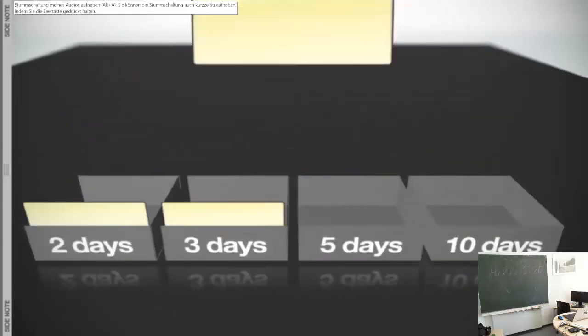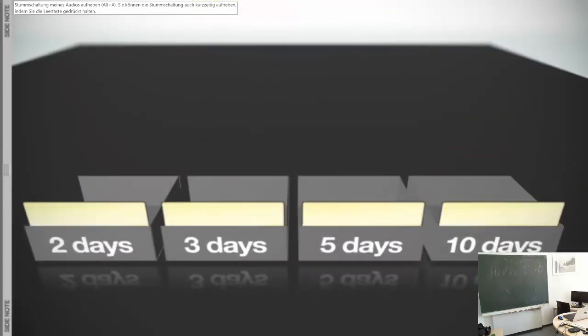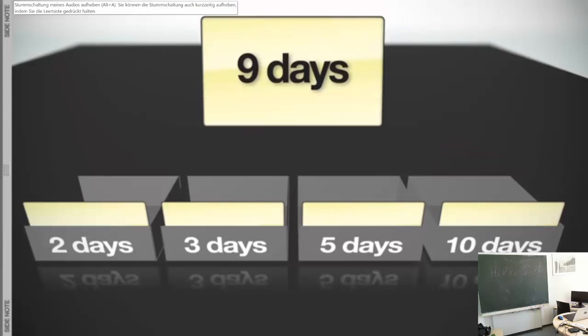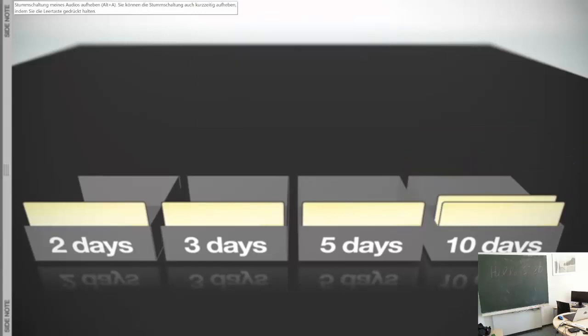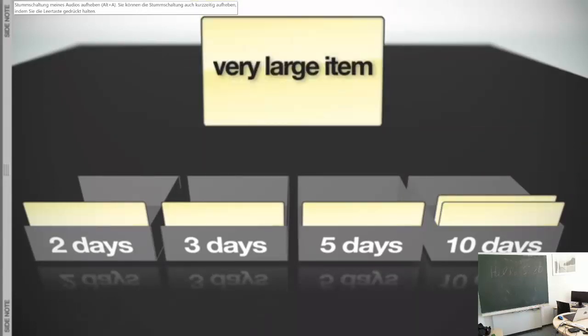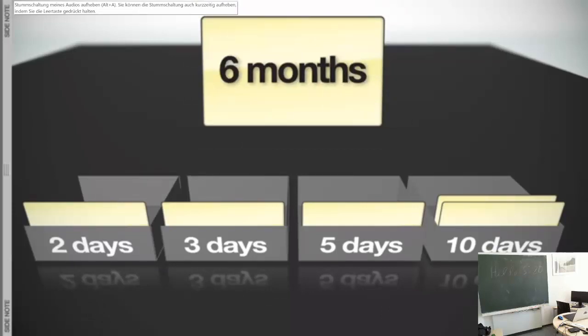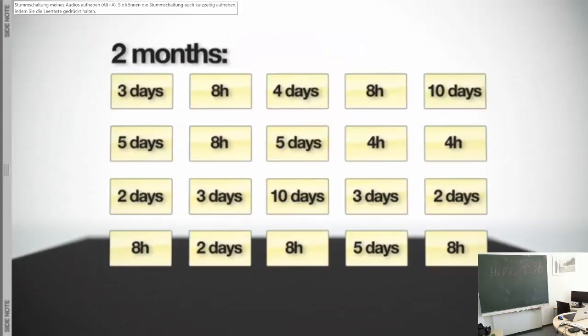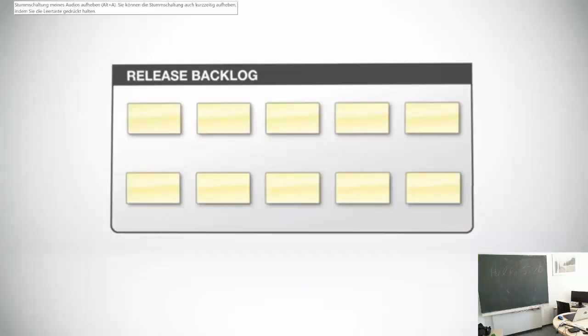Larger items will be estimated as two days, three days, five days, or ten days — all estimates in between fall into the next larger bucket. Extremely large items are similarly estimated in months: one, two, three, or six months. But such items will need to be broken down substantially before work actually begins. Now let's get back to the release backlog.